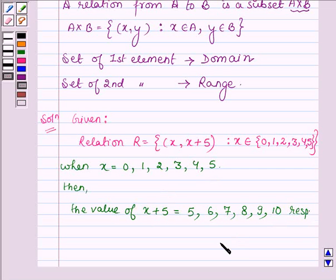Therefore, the set R has all the ordered pairs. When x is 0, then x plus 5 is 5.